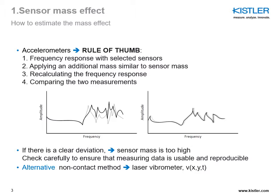Then, what you're going to do is apply an additional mass similar to the sensor mass — it could be a second sensor or a small comparable piece. Then you would re-excite your system and redo a frequency response test and compare the two measurements. If there is a clear deviation, your sensor mass is too high. Then you should check carefully to ensure that the measuring data is usable and reproducible.